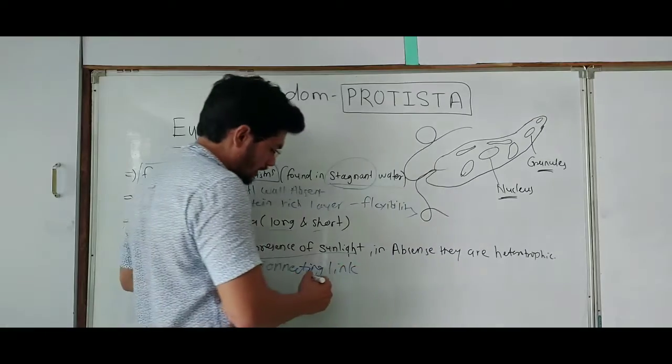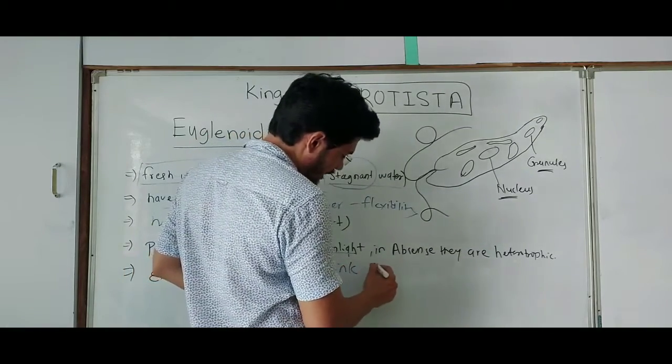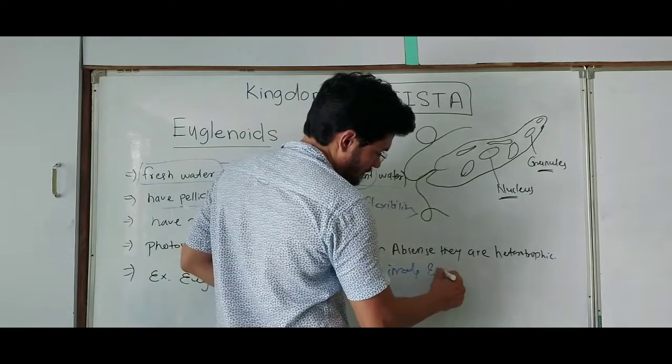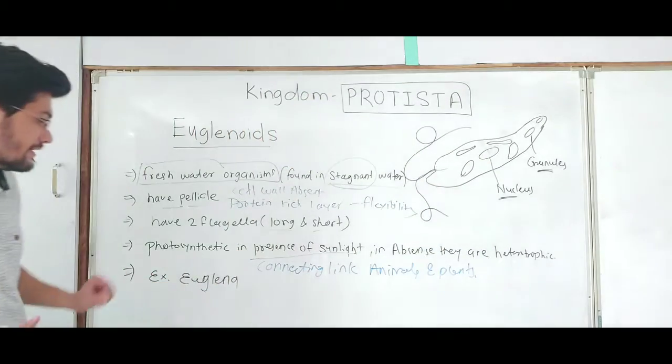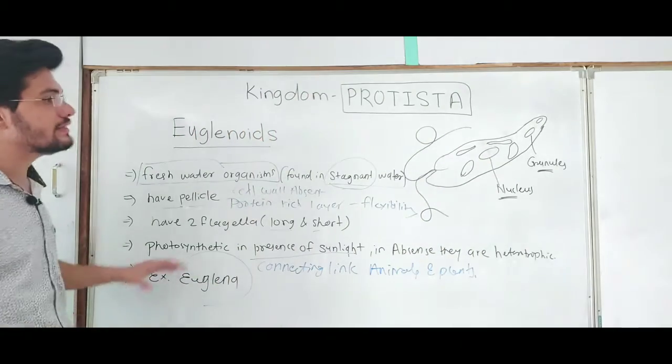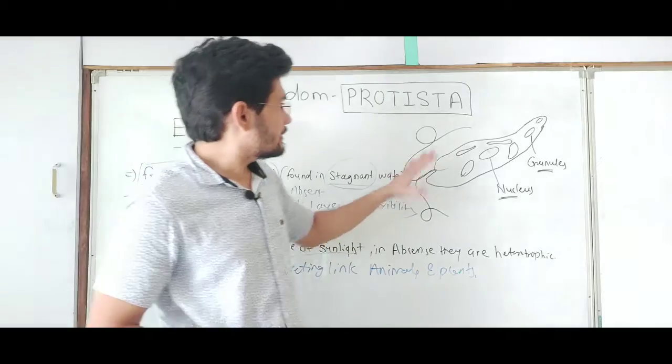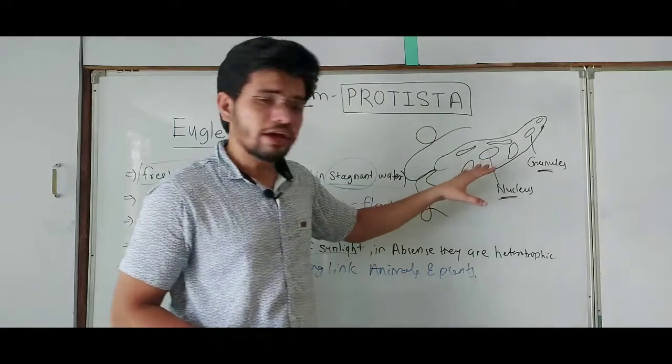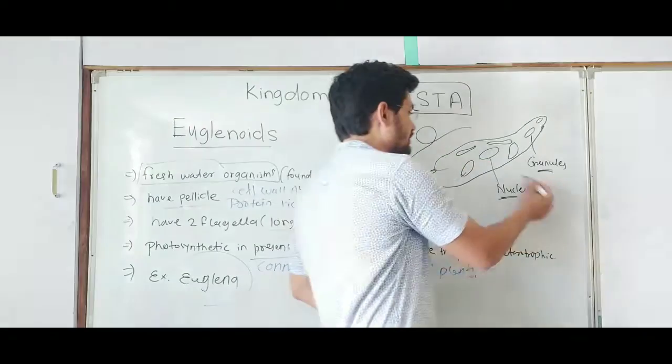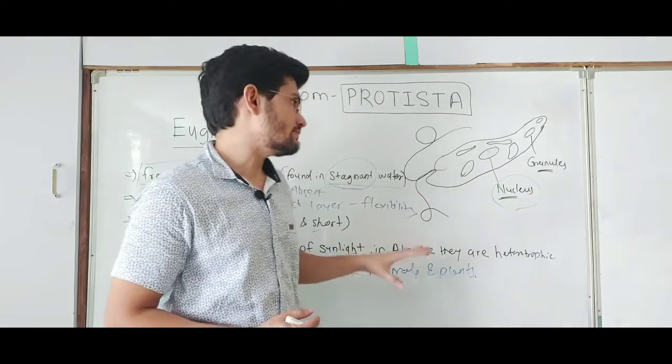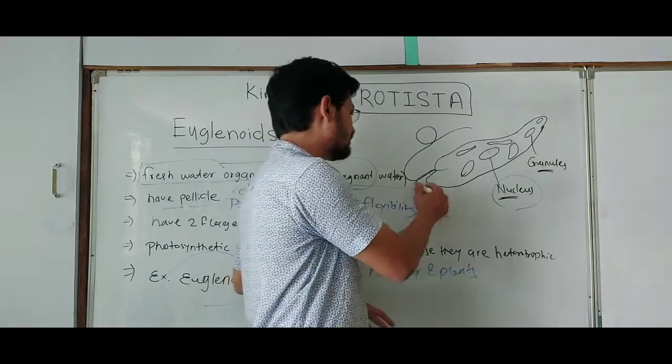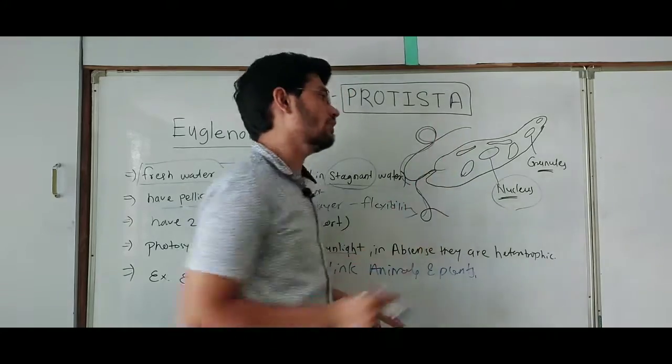So that's why they are called as connecting link between animals and plants. This is the main characteristic of euglenoids. The example is Euglena. You can see in the figure that they are eukaryotic so that's why they have nucleus and some granules and cell organelles and contain two flagella, one is shorter and other is longer.